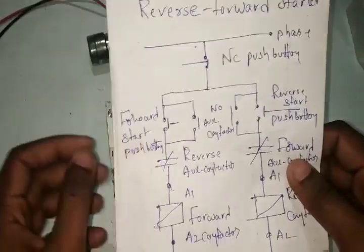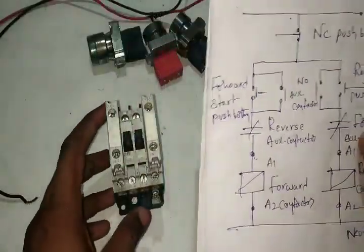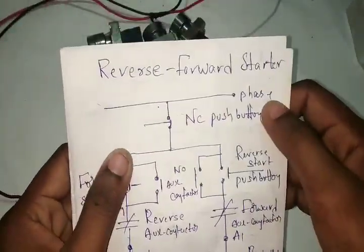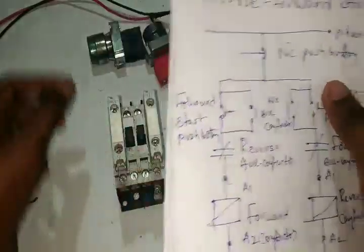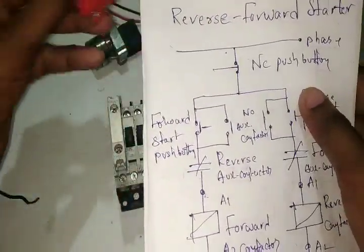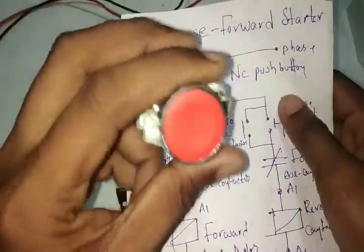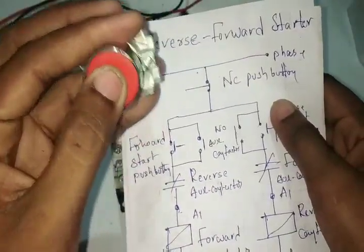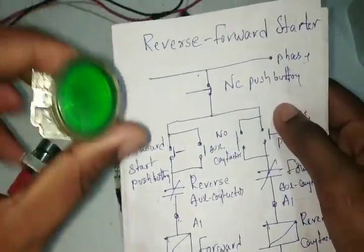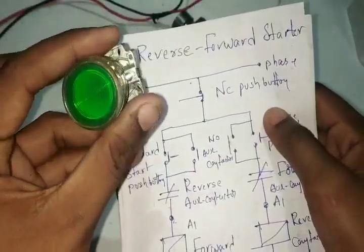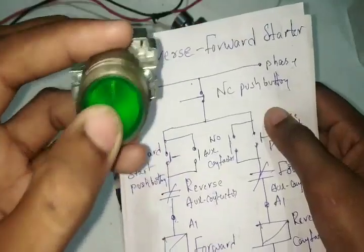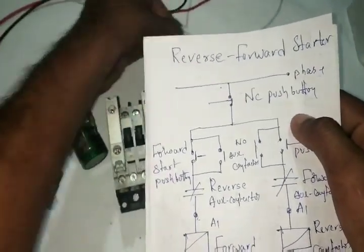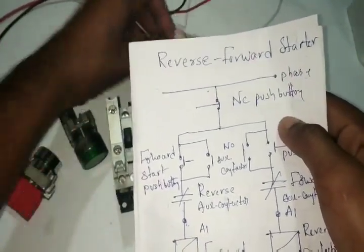We can go over the reverse forward starter using the first phase. We have to do the opposite and start. You will add the push button on the opposite side. If you do the same way to go forward, and if you do the same way to go for the reverse, you will give a reverse push button.